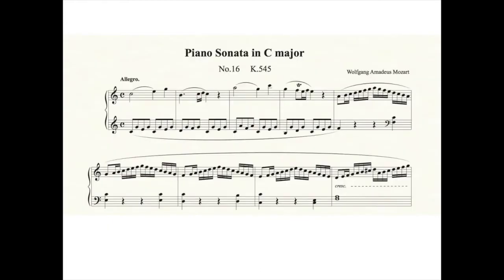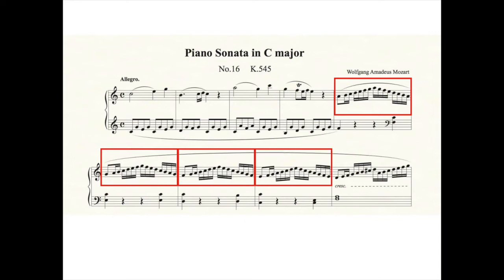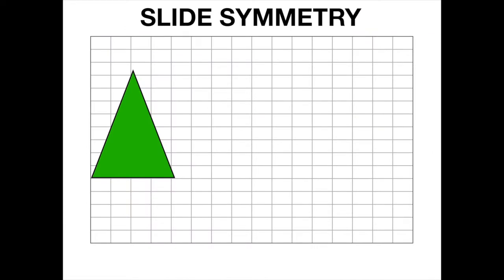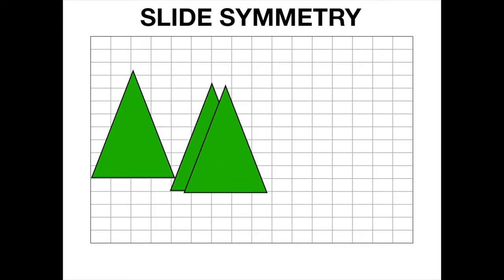This is Mozart's piano sonata in C major. Mozart has slide symmetry in his melody. He takes these notes that move up and down very quickly, and then he slides the melody a little lower and repeats it again. Each time the melody keeps the same shape, but he just plays it a little lower. The up and down motion of the melody is similar to this triangle shape. Let's listen to Mozart's melody as he slides it down to lower notes.